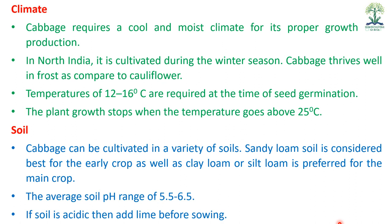Soil: Cabbage can be cultivated in a variety of soils. The optimum soil pH range is 5.5 to 6.5. If the soil is slightly acidic (below 5.5), lime should be added and incorporated into the soil before sowing.